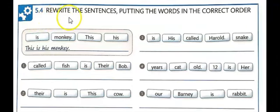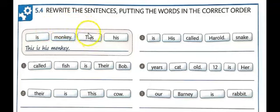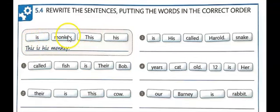In 5.4, you're going to rewrite the sentences, putting the words in the correct order. These words are out of order — they're mixed up. You need to put them in the correct order. Look for the capital letter, and this will be the first word of your sentence. Look for the punctuation, and this will be the last word of your sentence. Then you just need to figure out a couple of words.